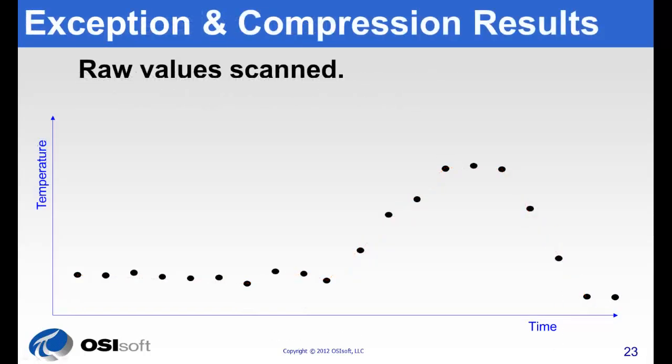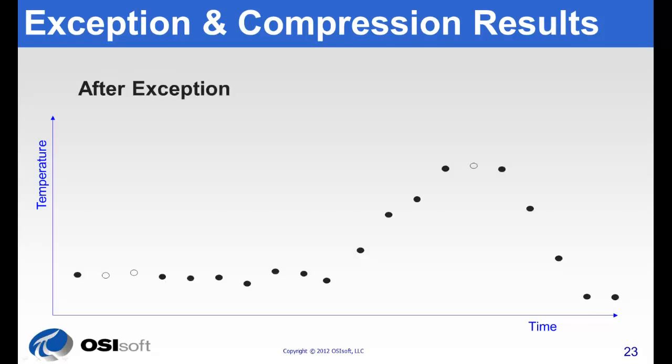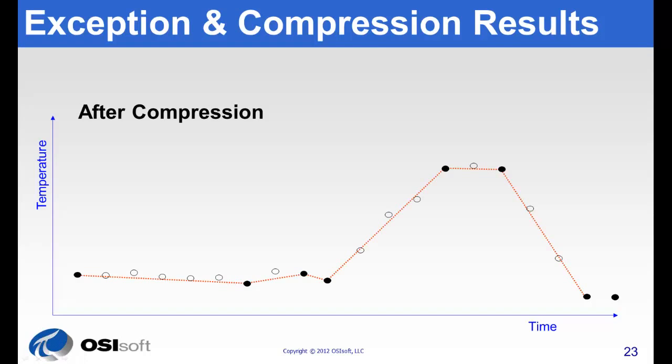Now we can see the raw values scanned at the source, what passed exception, what passed compression, the trend lines that PI ProcessBook or PI Coresight will draw, and we can see that all the values from the raw source still fall within the compression deviation we set up.